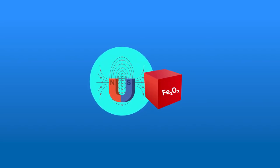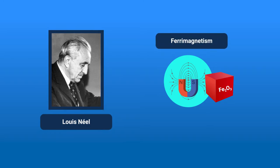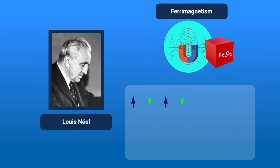Discovered in 1948 by Louis Niel, ferromagnetism occurs when a material is composed of atoms with opposing magnetic moments of unequal magnitude, resulting in net spontaneous magnetization.